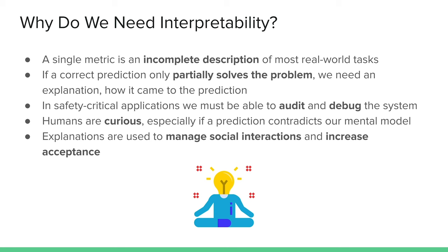A correct prediction usually only partially solves the problem — we often want additional explanations of how it came up with that output. In safety-critical applications, it's most important to understand what main features the model considered. If an image classifier labels an image as a bicycle, it should have looked at the two wheels and not the background — like the green grass — and understanding this helps us verify the model is reasoning correctly.